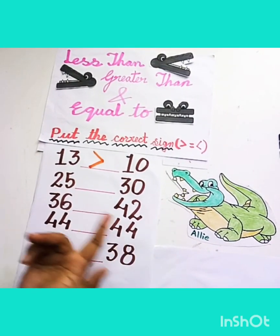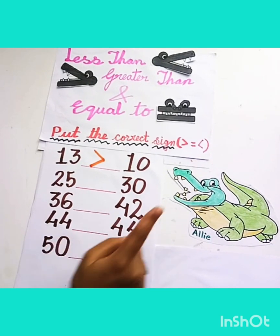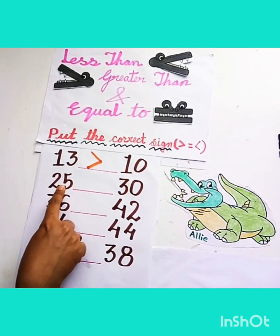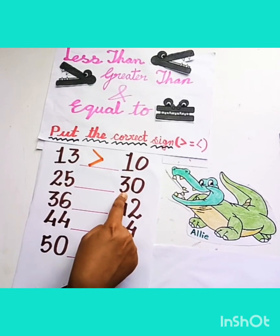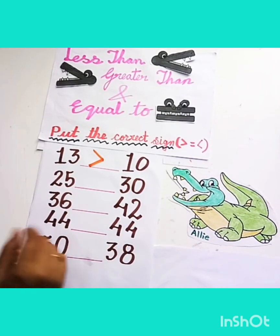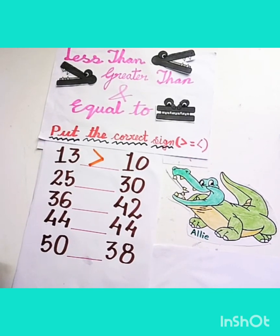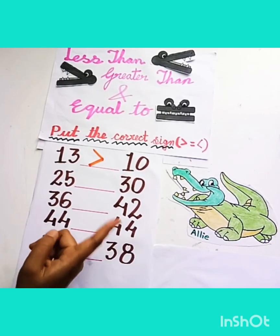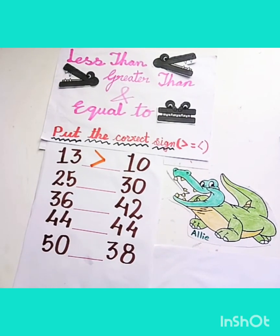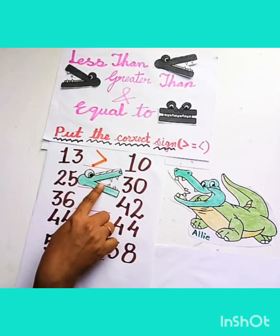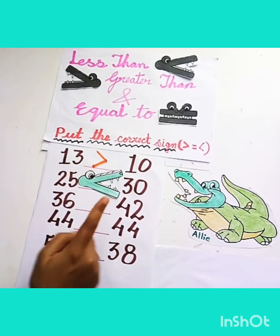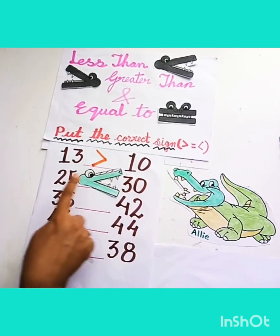Now, tell me children, which number will Ellie eat? Number 25 or number 30? Ellie always eats the bigger number. That's right — Ellie will eat number 30. Like this. Because 30 is bigger than 25.